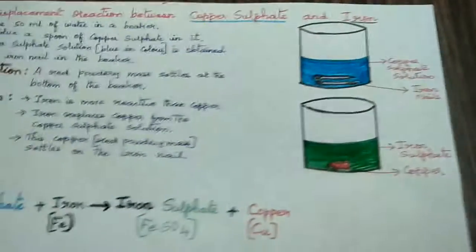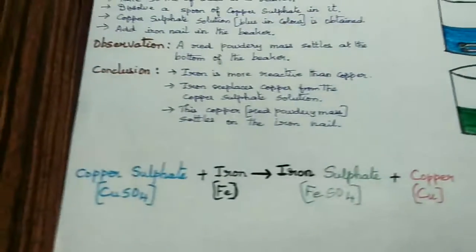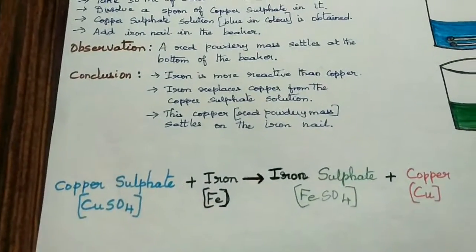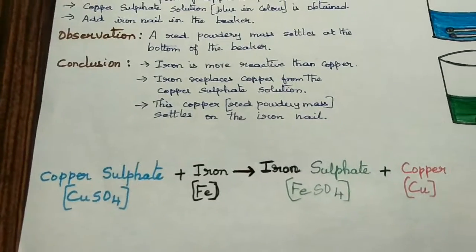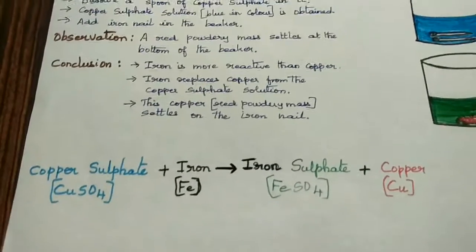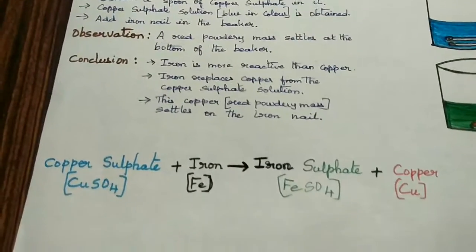Let's see the chemical reaction. Copper sulfate plus iron gives iron sulfate plus copper.